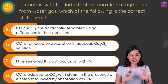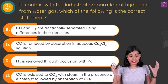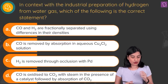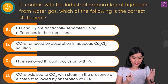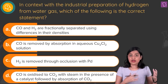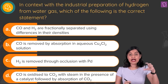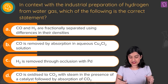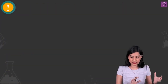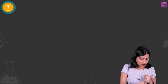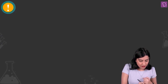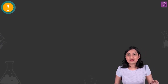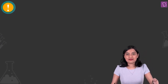In the context of the industrial preparation of hydrogen from water gas, which of the following is the correct statement? Before diving into the options, we need to understand the process. You start with water gas — carbon monoxide plus H₂.